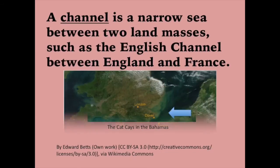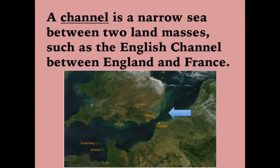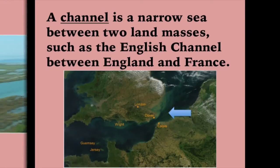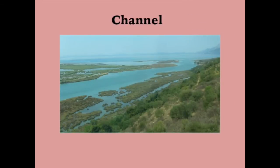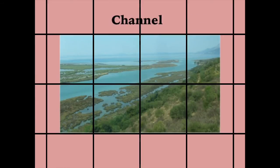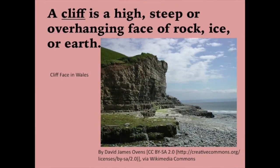A channel is a narrow sea between two land masses, such as the English Channel between England and France. A cliff is a high, steep or overhanging face of rock, ice or earth.